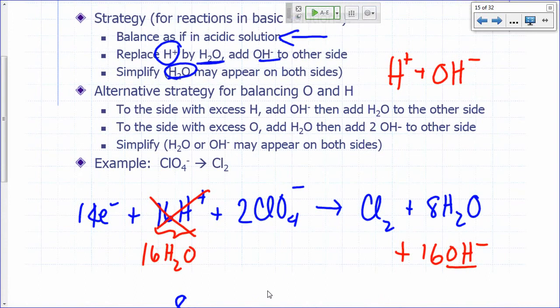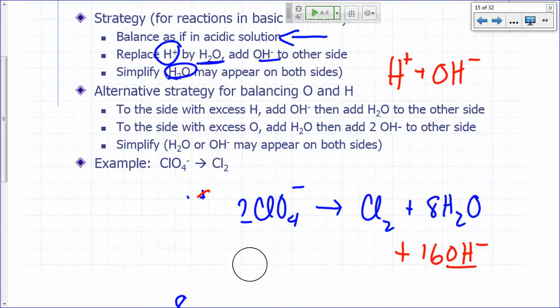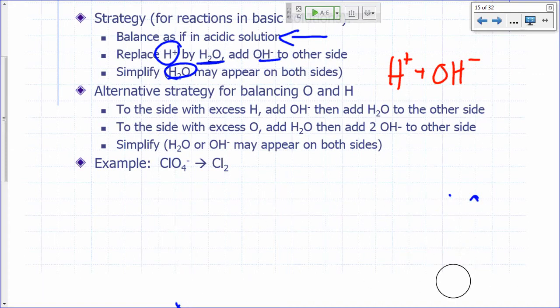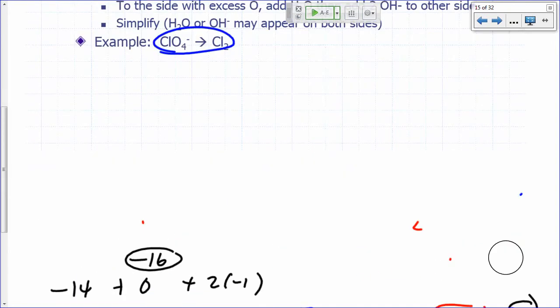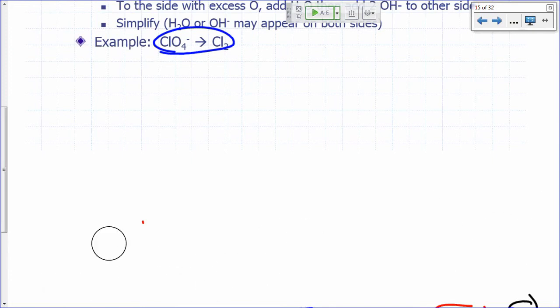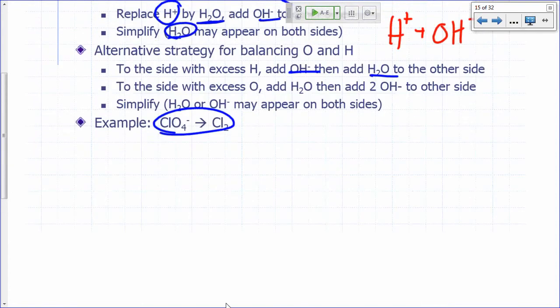Now, there is an alternative strategy for doing this. And this one, some teachers prefer this because they don't like the idea of putting H plus when it's a basic solution and then making the adjustment later. So you can actually just balance using hydroxide and water at the outset. So let's illustrate that second strategy with this. Whichever one you feel comfortable with, you can use. I only care about the final answer that it's balanced. So here you have ClO4 minus goes to Cl2. Of course, you need to know how to do it.